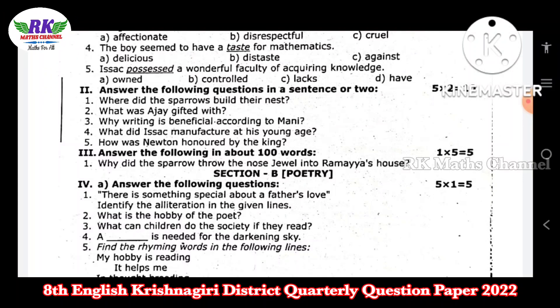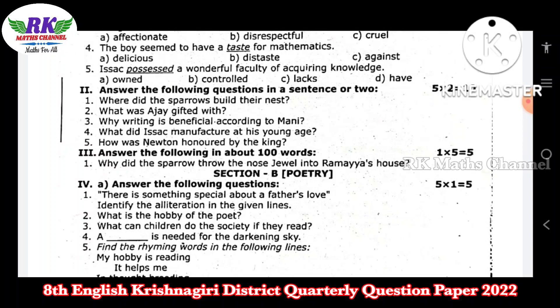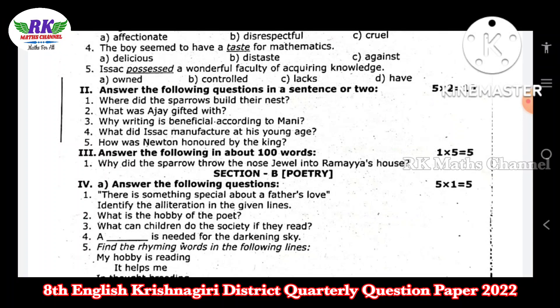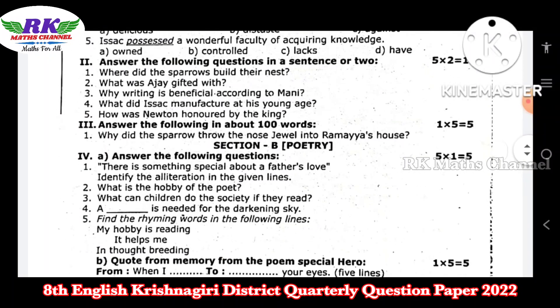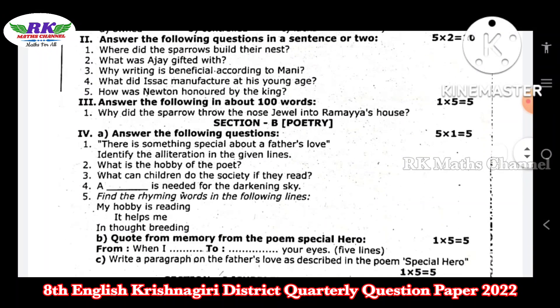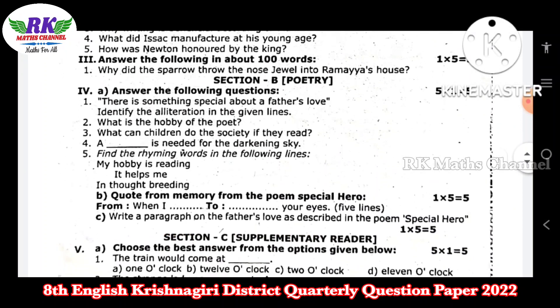Five questions to answer. Next, answer the following in about 100 words — that's one paragraph question. Then we move on to Section B.